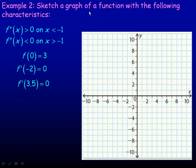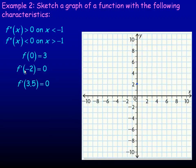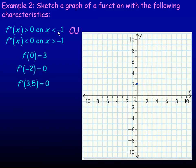One last example — Example 2. It says: sketch a graph of a function with the following characteristics. The second derivative is greater than 0 where x is less than negative 1, and the second derivative is less than 0 where x is greater than negative 1. We're told f(0) equals 3, so that's a point on the graph. Also, f prime of negative 2 equals 0 and f prime of 3.5 equals 0 — where the first derivative is 0, there's a horizontal tangent line, meaning a possible minimum or maximum. Where the second derivative is greater than 0, the graph is concave up — so it's concave up to the left of negative 1 and concave down to the right of negative 1.